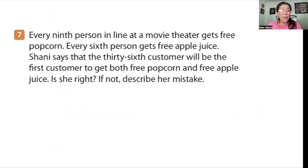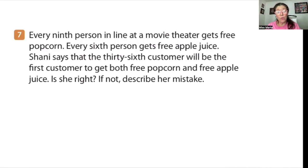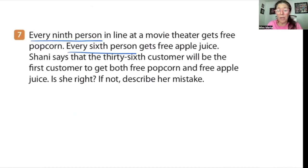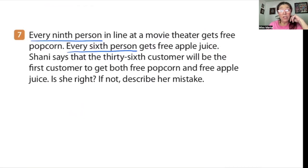Every ninth person in line at a movie theater gets free popcorn; every sixth person gets free apple juice. Shani says that the 36th customer will be the first customer to get both free popcorn and free apple juice. Is she right? If not, describe her mistake. I know it's a least common multiple problem because we're talking about every ninth person and every sixth person. I want to get a clearer picture to understand Shani's mistake, so I'm going to do it the long way and list the multiples of nine and six.